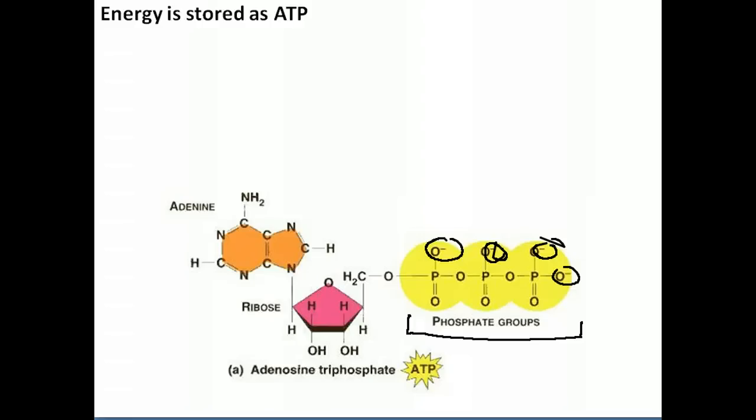Now, if you remember from chemistry, negative charges repel each other. So just think of all the energy that is required to keep these oxygens so close to each other. That's the energy that's trapped into the molecule ATP. This molecule is very important to make, to drive anabolic reactions so that we can make all the macromolecules that all the cells need.